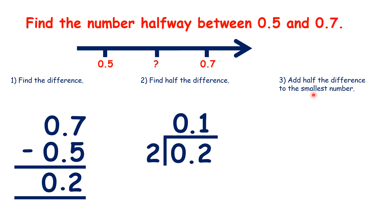Then we add half the difference to our smallest number. So our smallest number is 0.5, and we found that half the difference is 0.1, so when we add them together, we get 0.6. So 0.6 is the number halfway between 0.5 and 0.7.